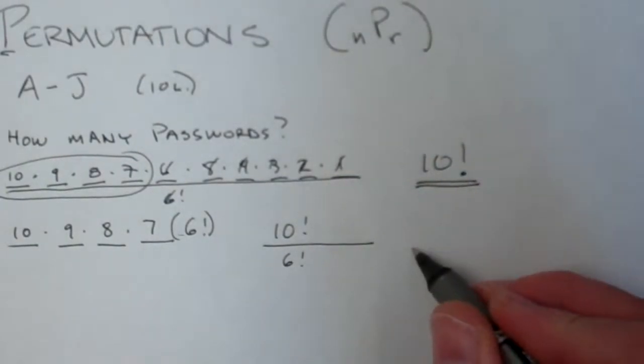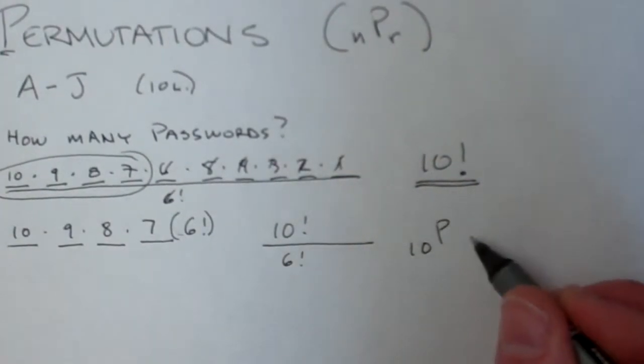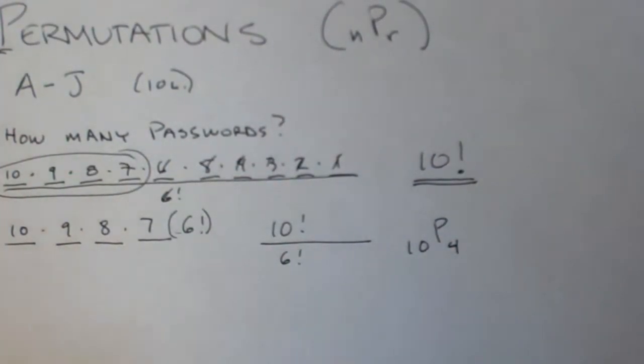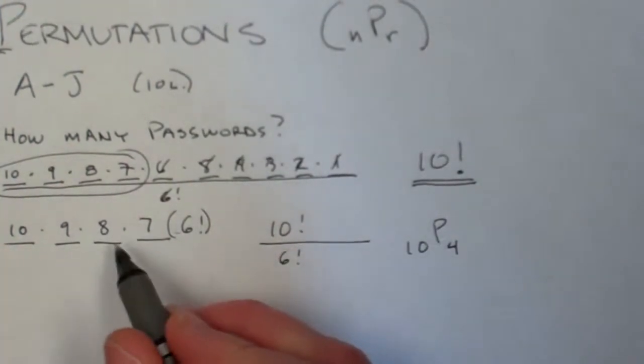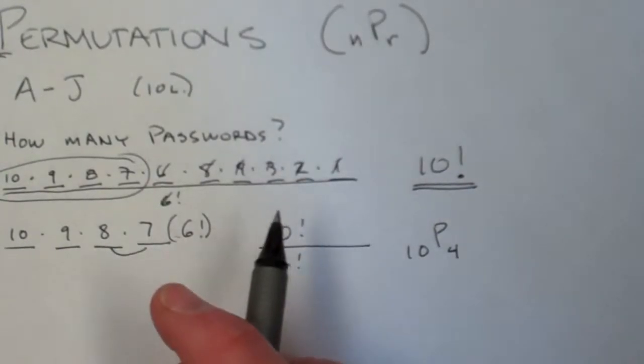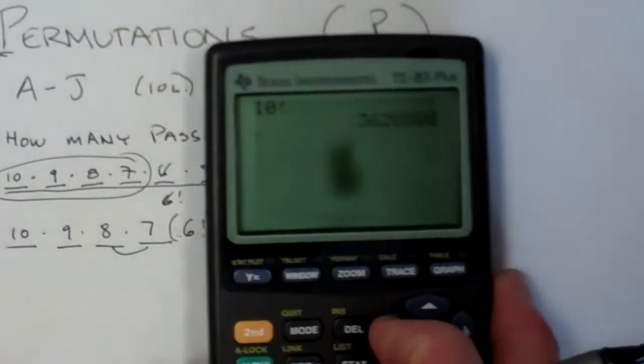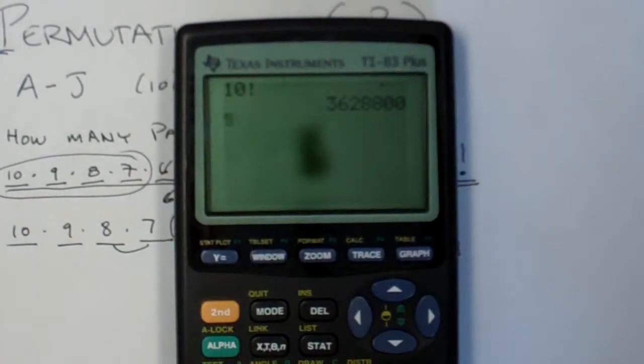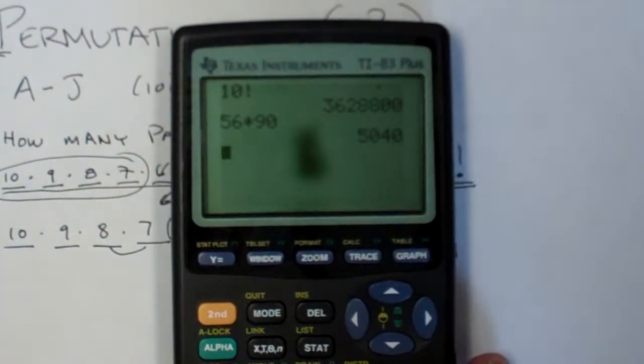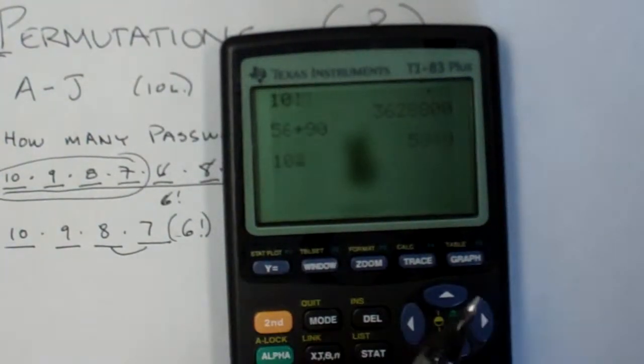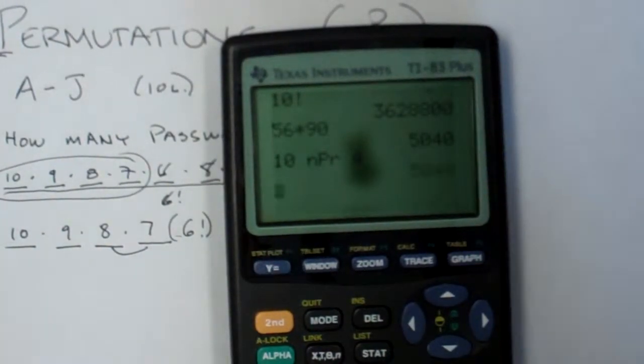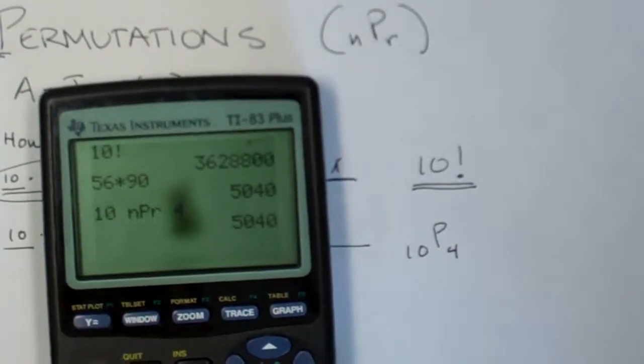Well, that is what nPr is. If I've got ten letters and I'm permutating them with four at a time, that's 10P4. So we can do this pretty quickly in our head. Let's see. That's going to be fifty-six times nine. Oh, that's a bit much. But then times ninety. So fifty-six times ninety. Let's see what that is when I type in ten, math, probability, nPr, option number two, and then hit four. Oh my goodness, it's the same answer. So that's how we do that.